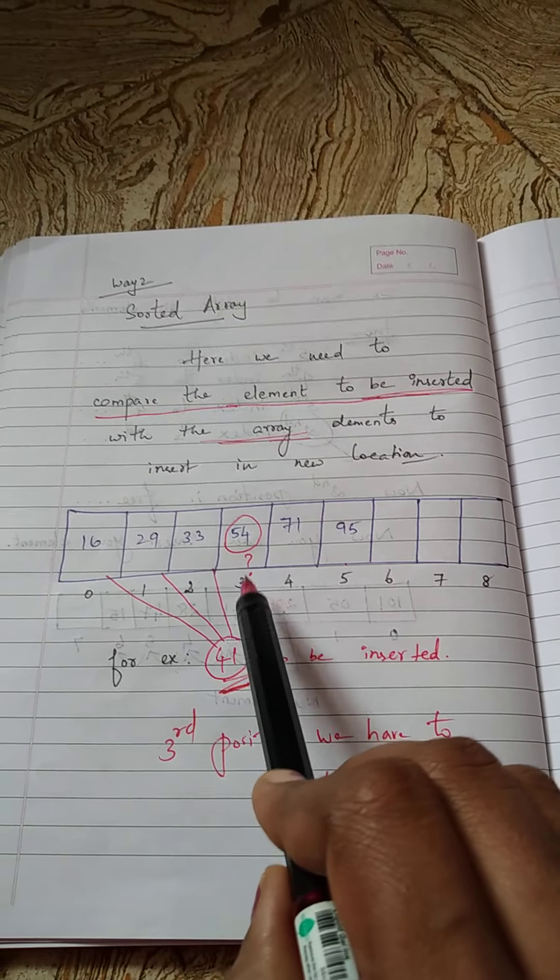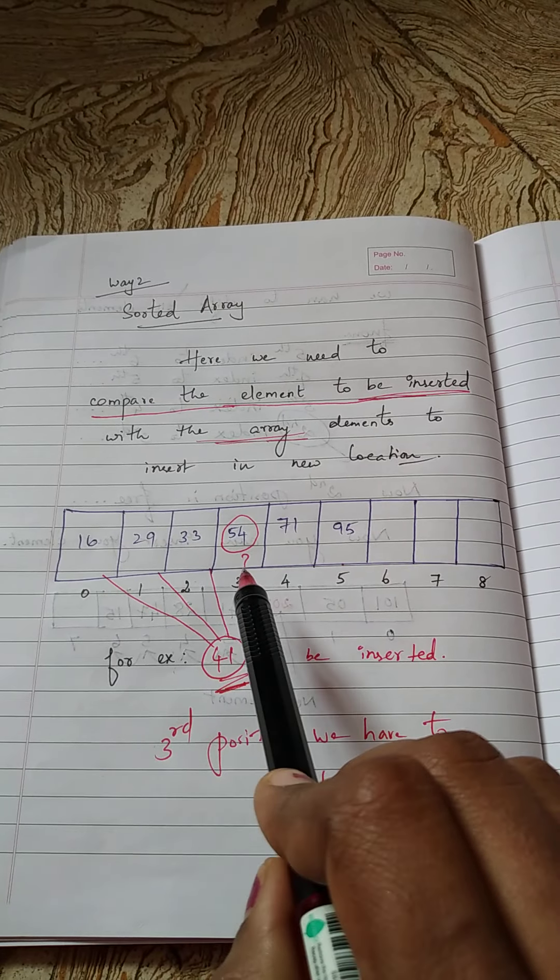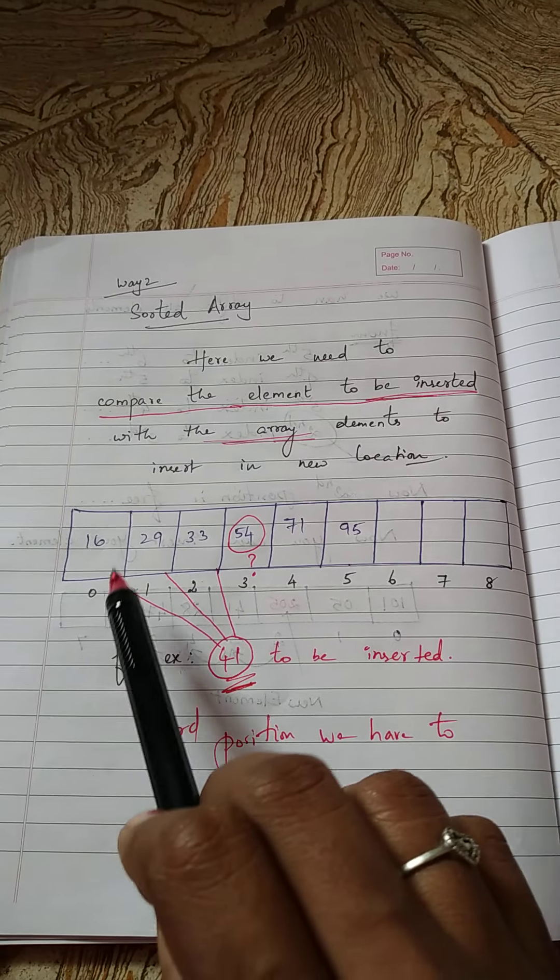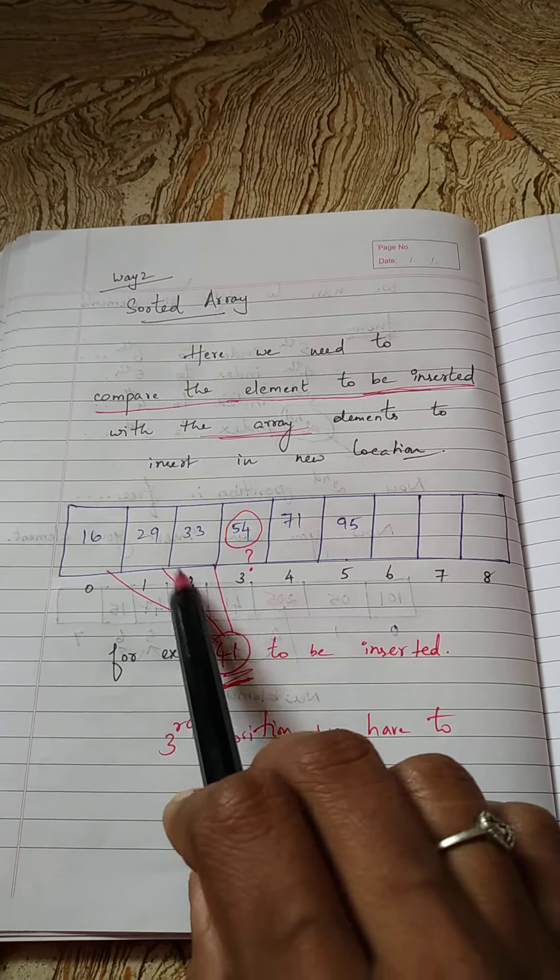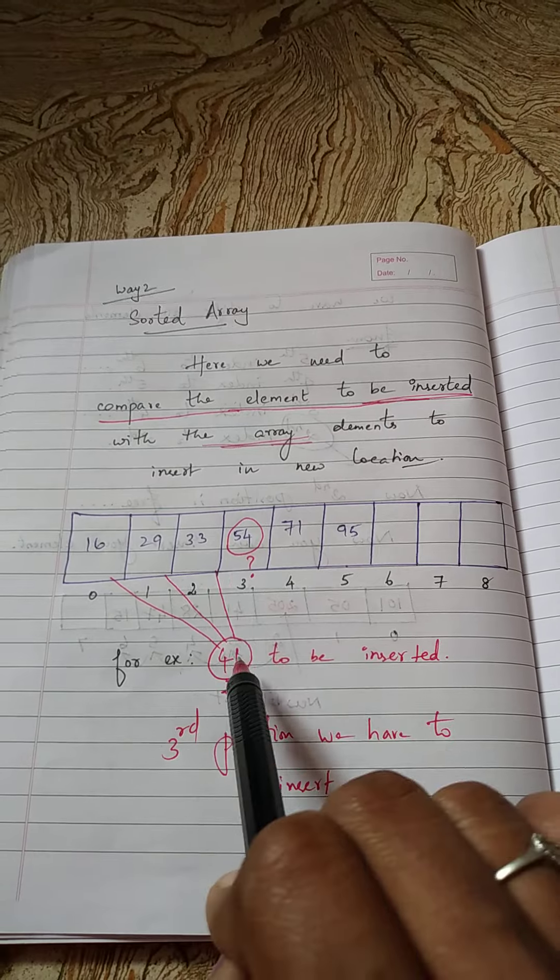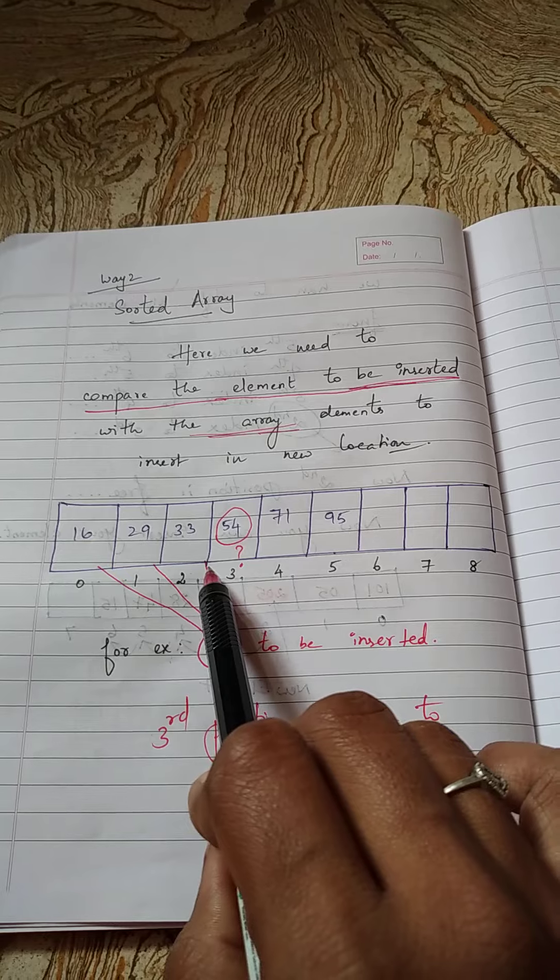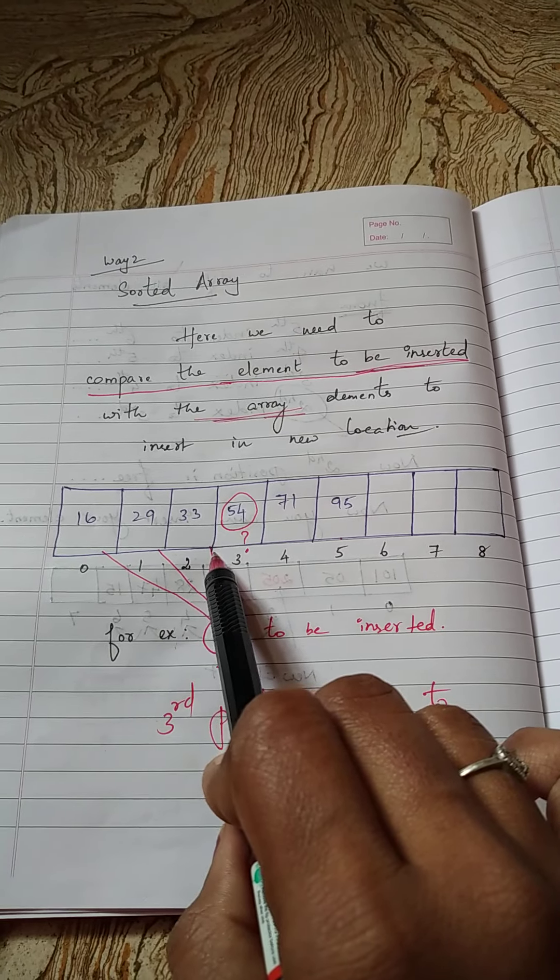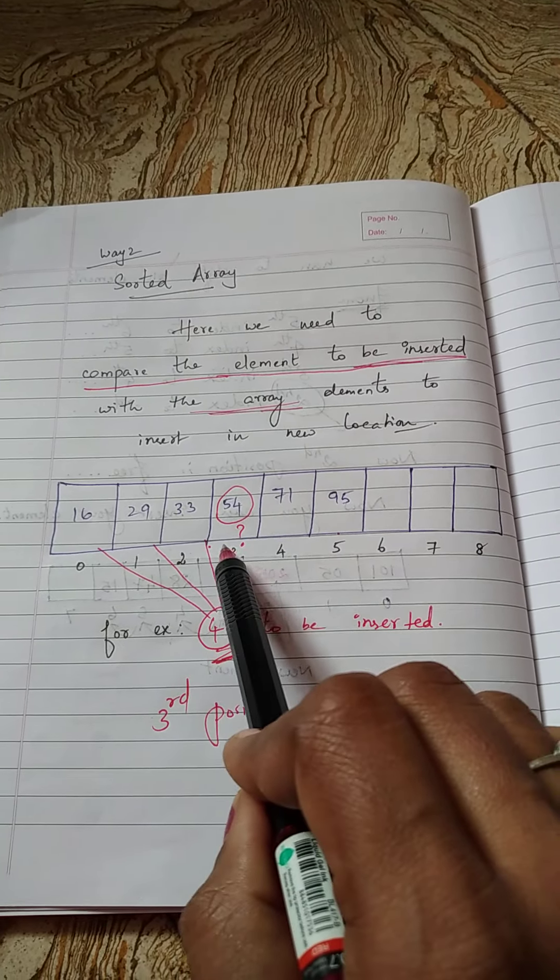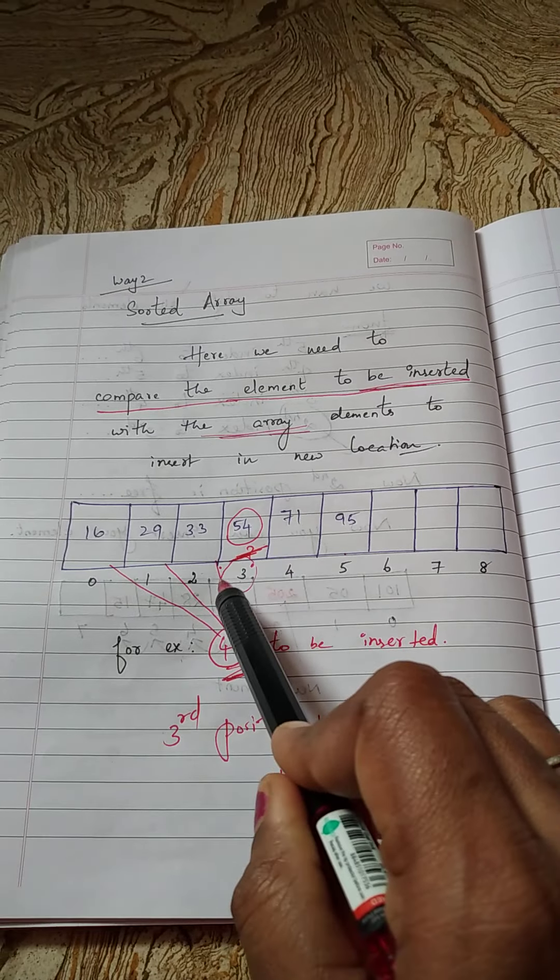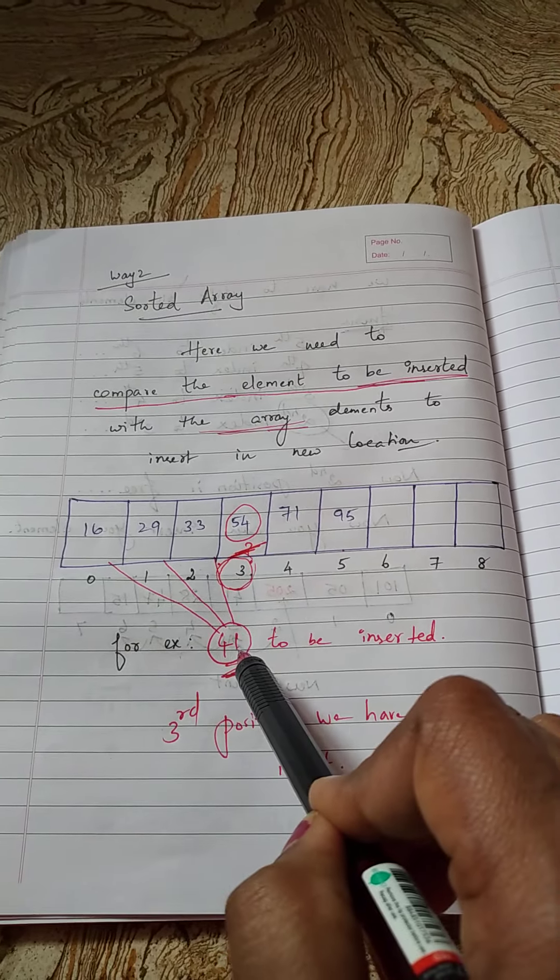But in programming language you have to compare 41 with 16. So this is not the place. 29 not the place, 33 not the place. 54, yes 54 is greater than 41. So before 54 you have to insert a new element, that is at index 3. In third index you have to insert the value of 41.